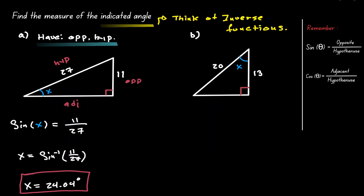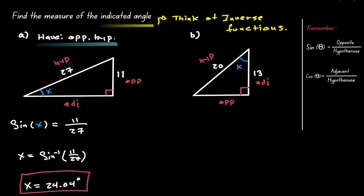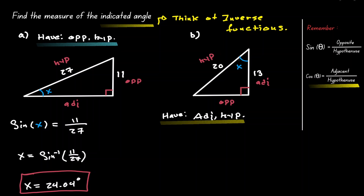Let's take a look at example B. Let's identify the angle we're looking for, which is x, and label our triangle based on this angle. We have information about the adjacent and information about the hypotenuse. Since we have adjacent over hypotenuse, we want to use the cosine function, because cosine is defined as adjacent over hypotenuse. So let's set this up: if we evaluate the cosine of angle x, we get the ratio of adjacent over hypotenuse, which in this case is 13 over 20.